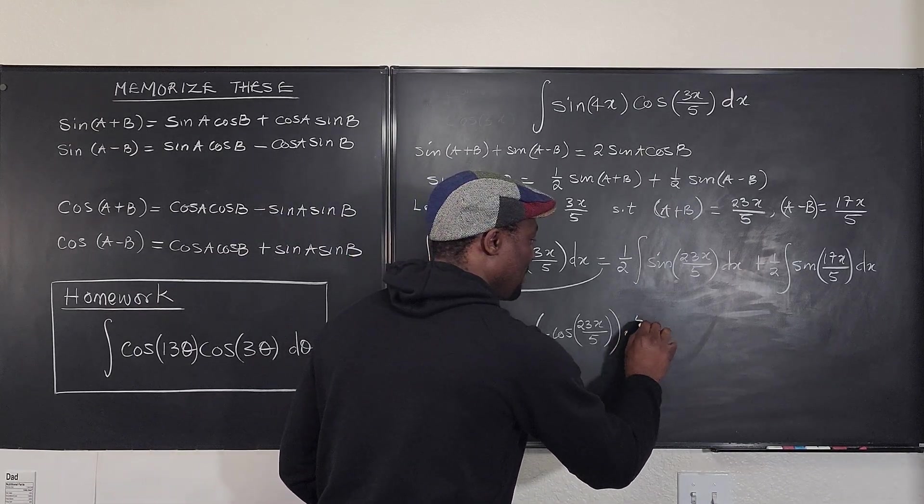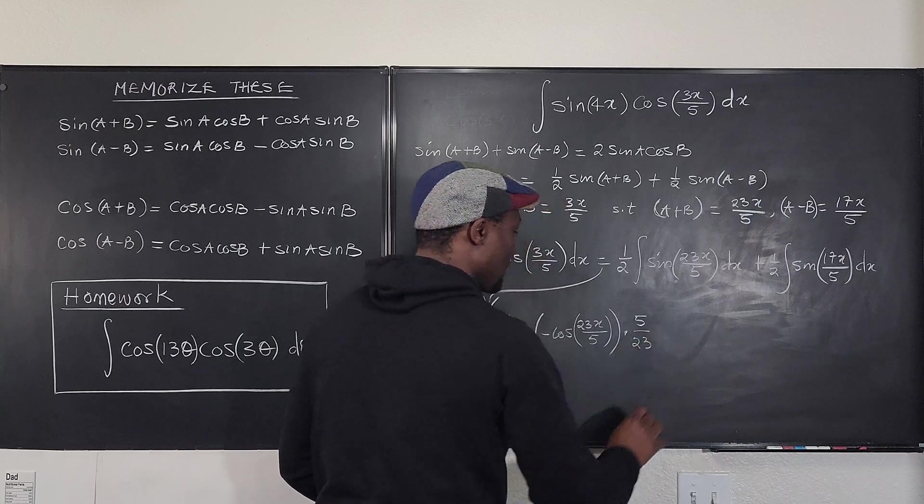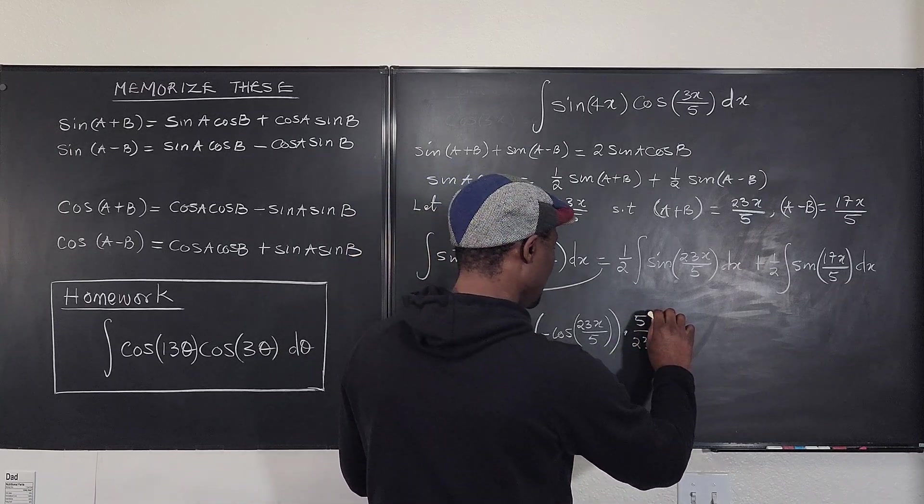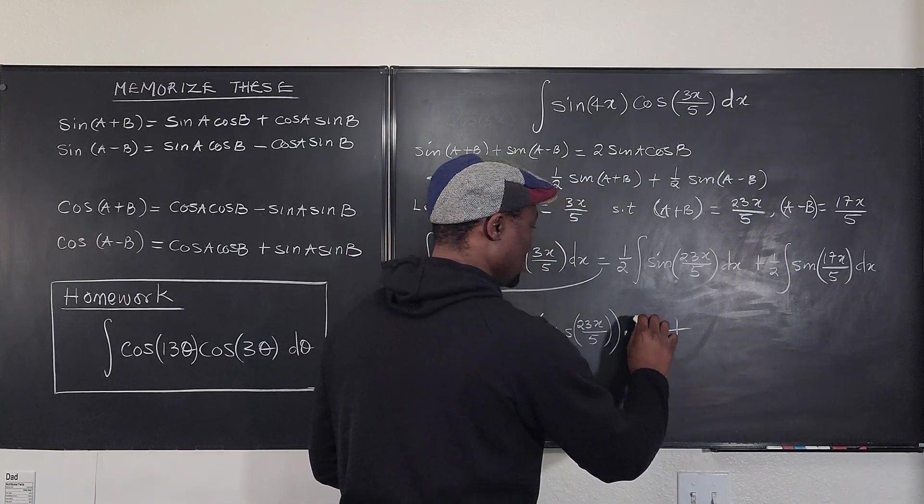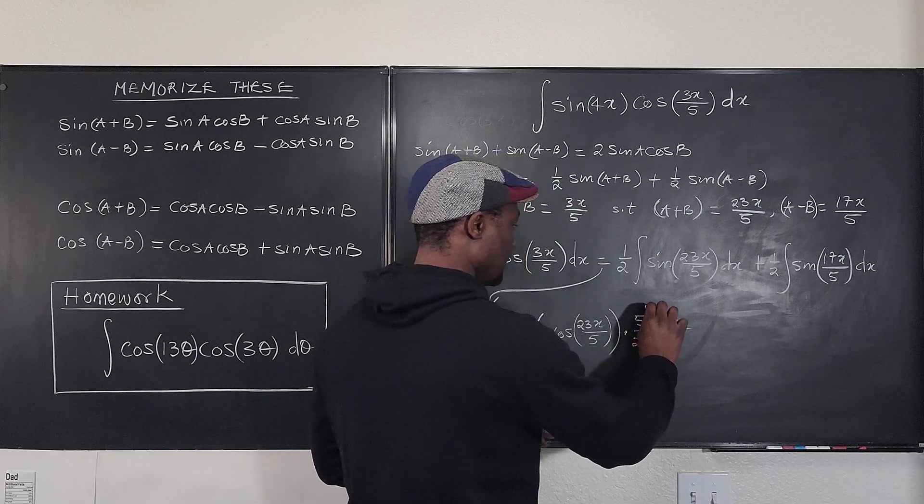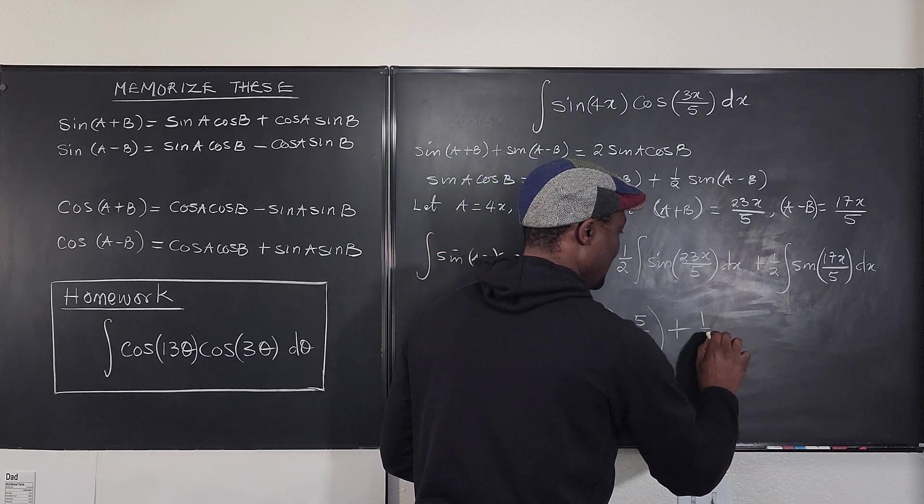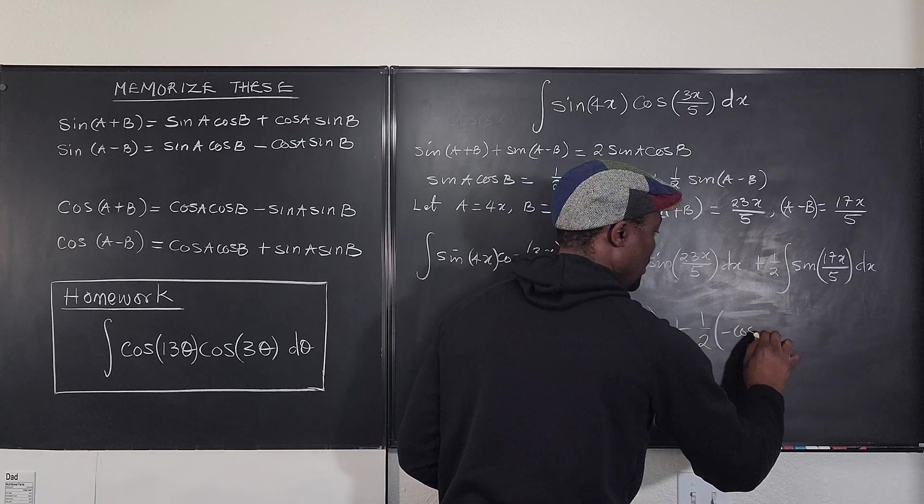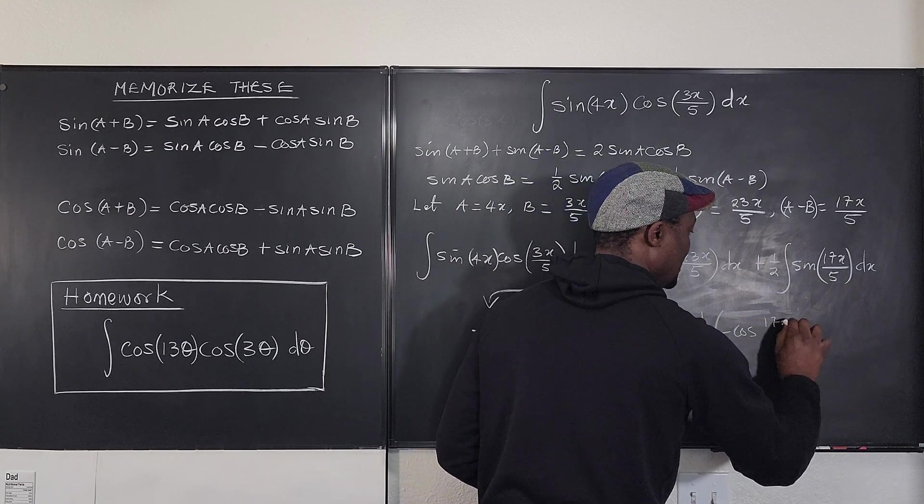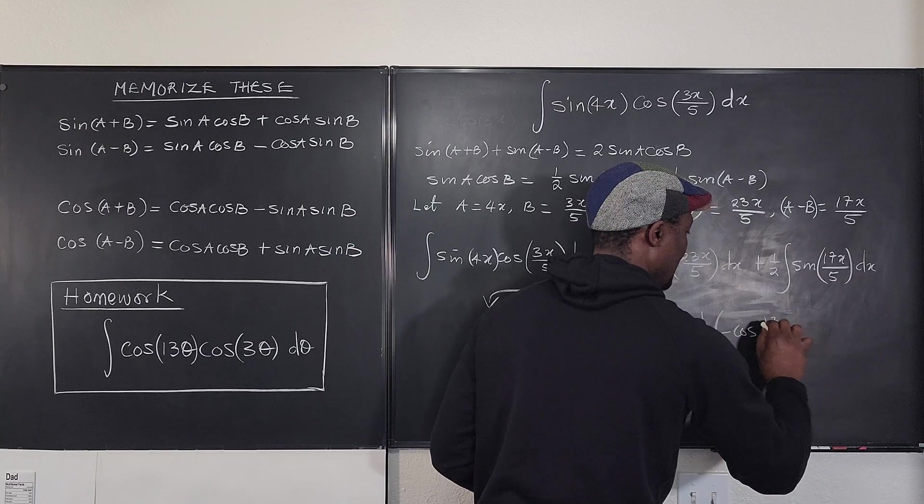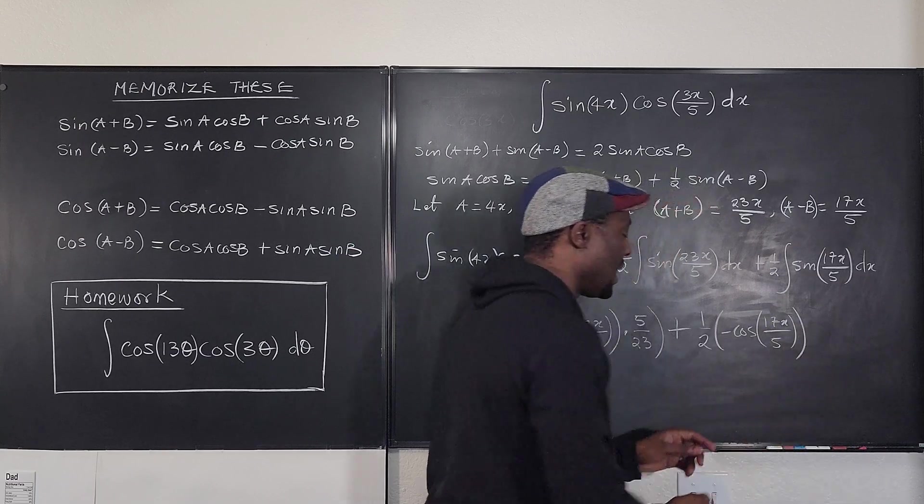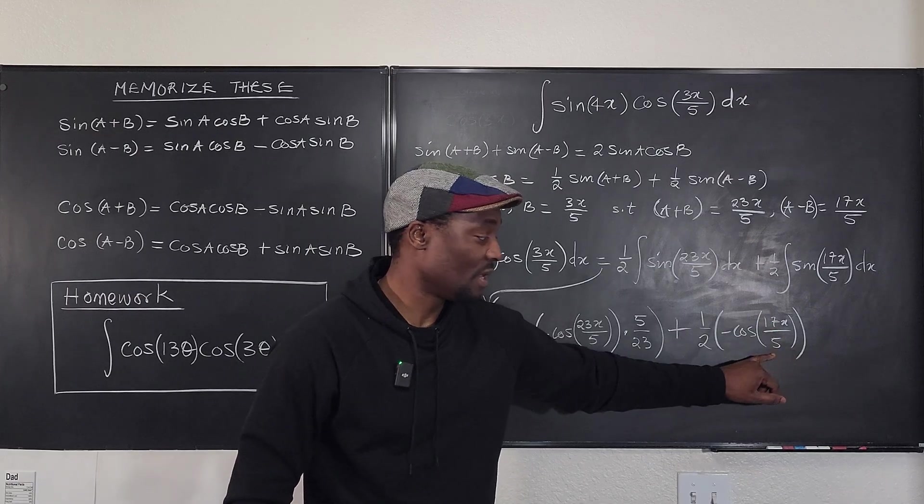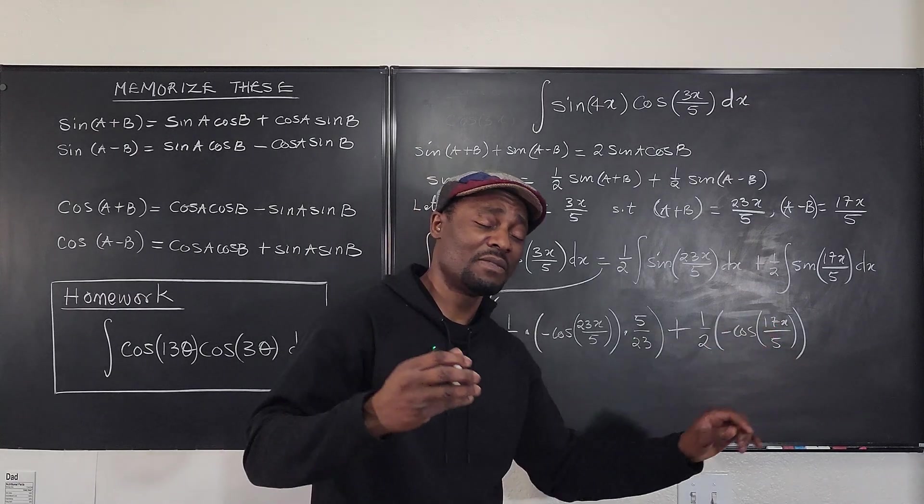We do the same thing here. It's going to be plus 1/2 again. We take the derivative... it's going to be negative cosine of 17x/5, multiplied by or divided by the derivative of this, which is going to be 17/5. You flip it, it's going to be 5/17.